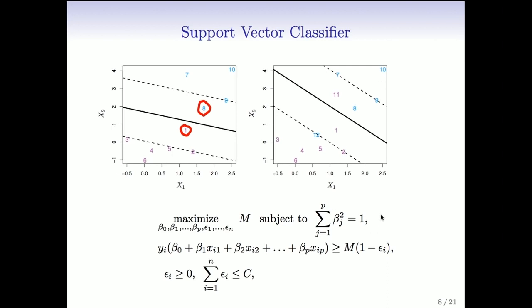And we need to modify the formulation of the problem to accommodate it. So part of the problem is the same. We're going to maximize M subject to the betas summing squares to 1, so that's a unit vector. Now we want all the points, the distance of all the points to be bigger than M, but discounted by a discount factor, 1 minus epsilon_i.